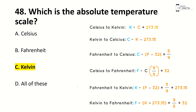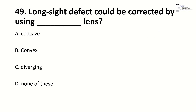Atoms are composed of electrons and a nucleus. Long-sightedness could be corrected by using — right answer is B, convex lens. If the question is about short-sightedness, the answer is concave.